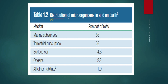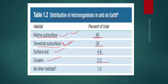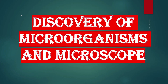The next topic is the distribution of microorganisms on Earth — in which environments they are present and in what percentage. In the marine subsurface, 66% of microorganisms are present. In the terrestrial subsurface (land surface), 26% of microorganisms are present. In surface soil, 4.8% of microorganisms are present, and in the oceans, 2.2% of microorganisms are present.